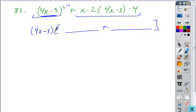So if we removed a power of 4x minus 3, that is going to leave just one 4x minus 3. In the second group, it removes this whole factor. So I'm left with 4 times 2, which is 8 times x.